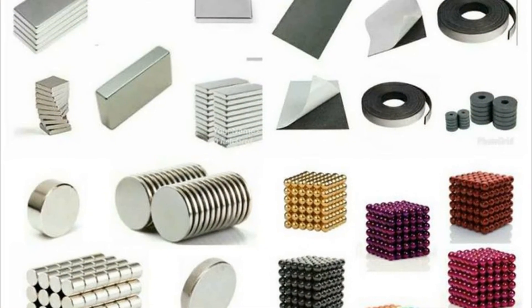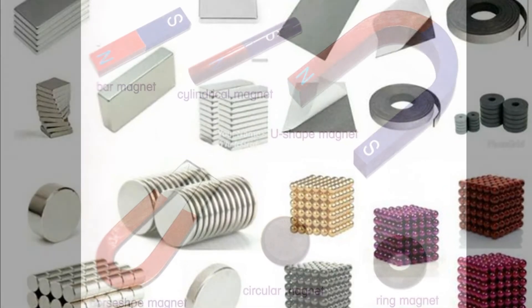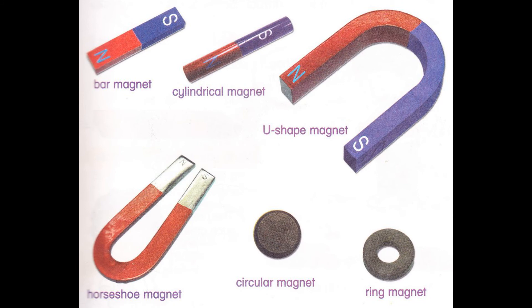As such, magnets of different shapes can be made in order to suit a specific purpose. A piece of steel or iron to which the properties of a lodestone have been imparted is called an artificial magnet.